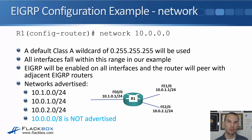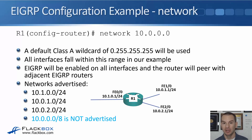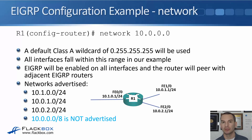10.0.0.0/8 is not advertised — even though that is what we configured in the network statement. The network statement is just used to look for interfaces that fall within that range. When we find a match, we advertise the network configured on the interface, which are all /24s here. We do not advertise 10.0.0.0/8.